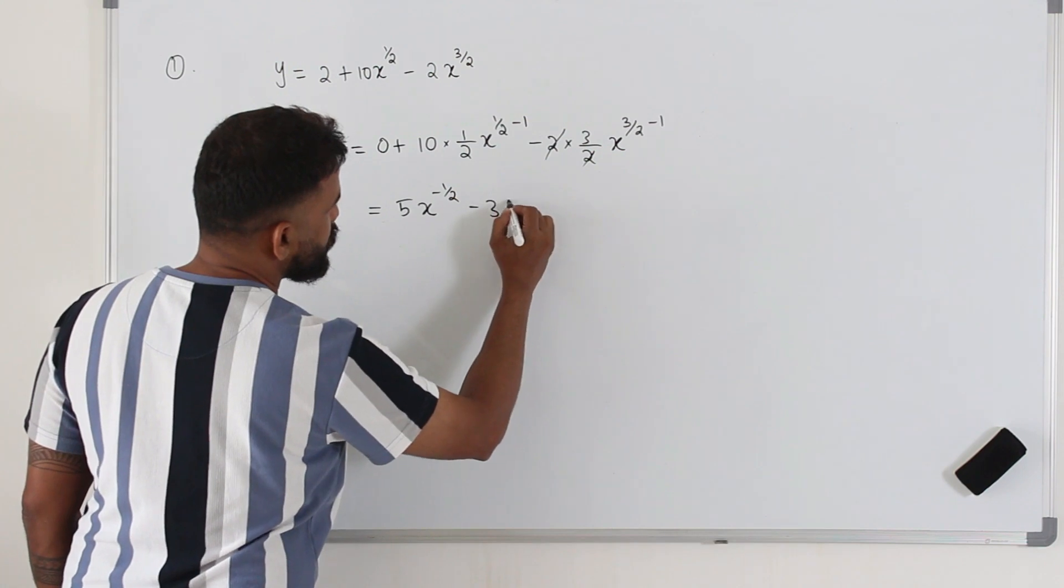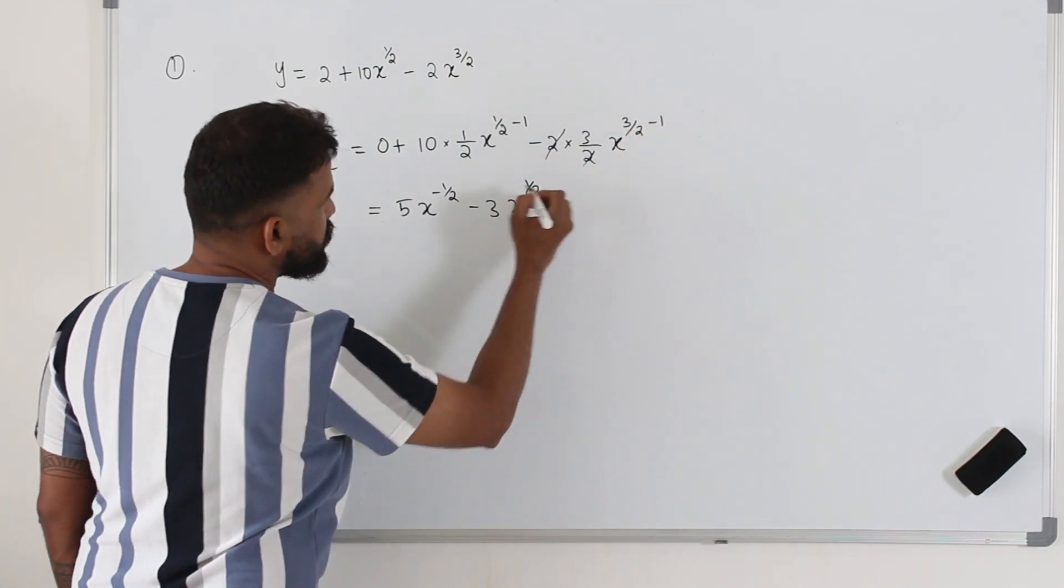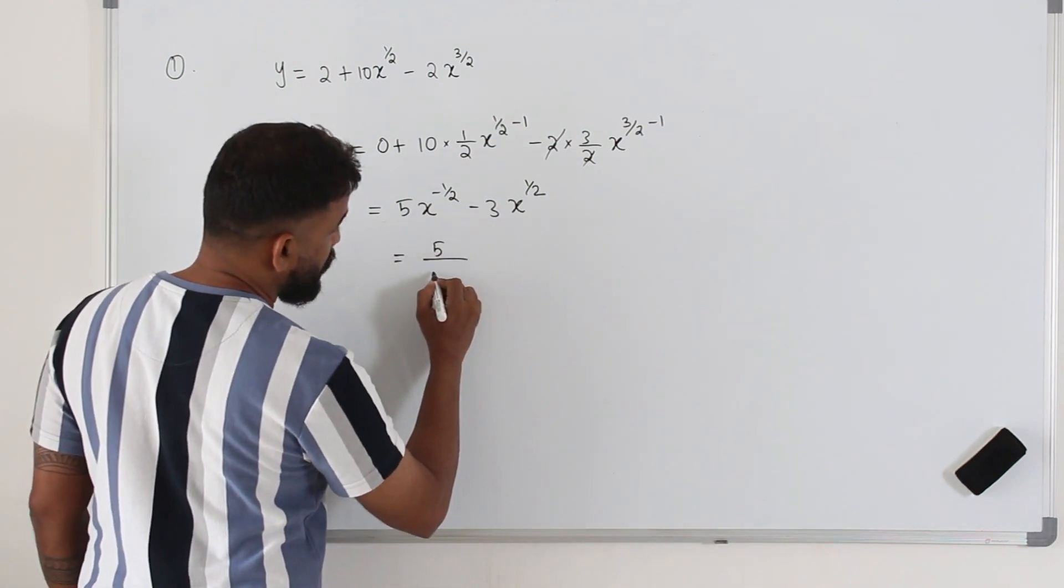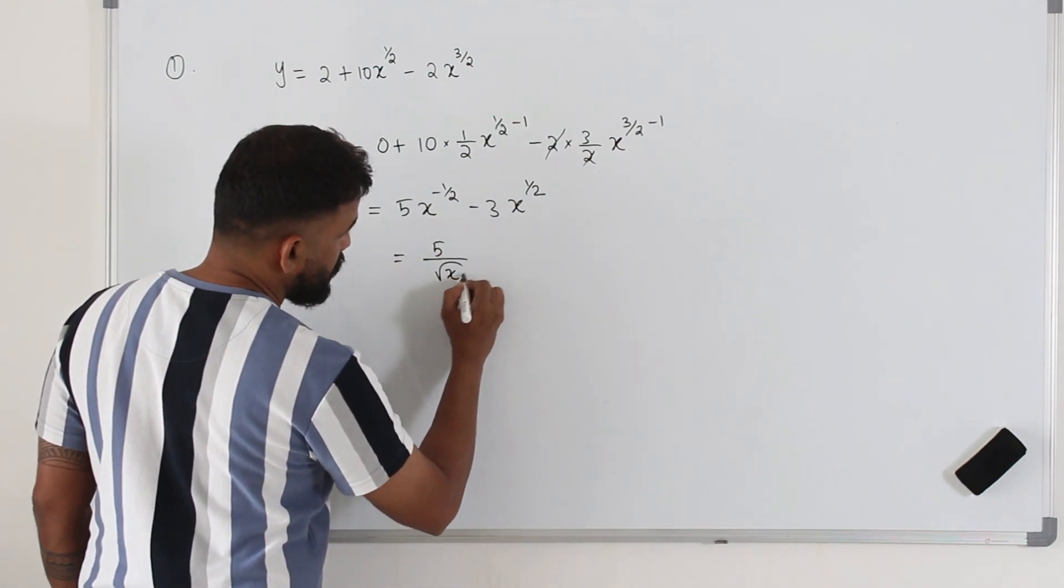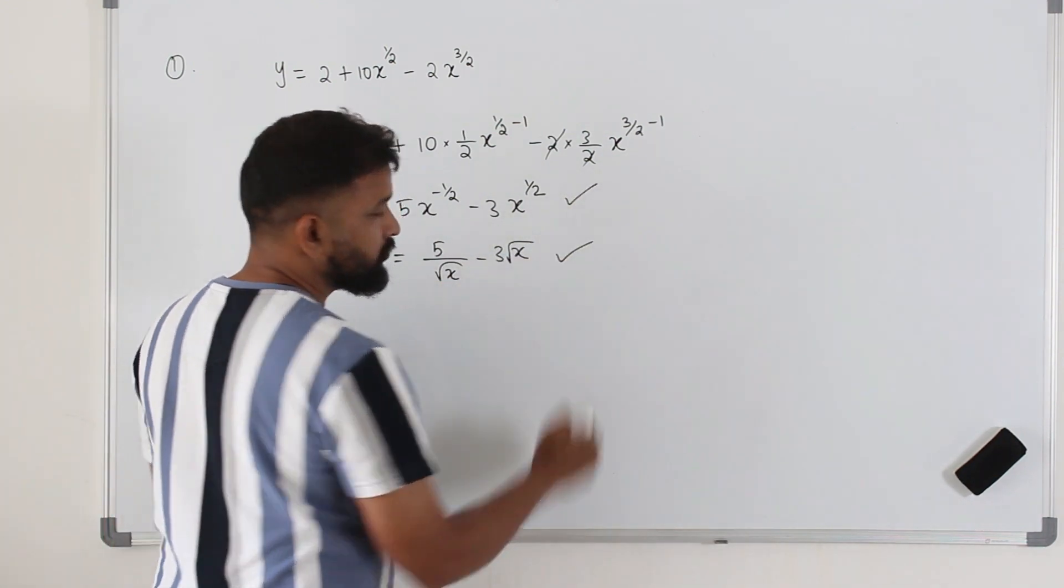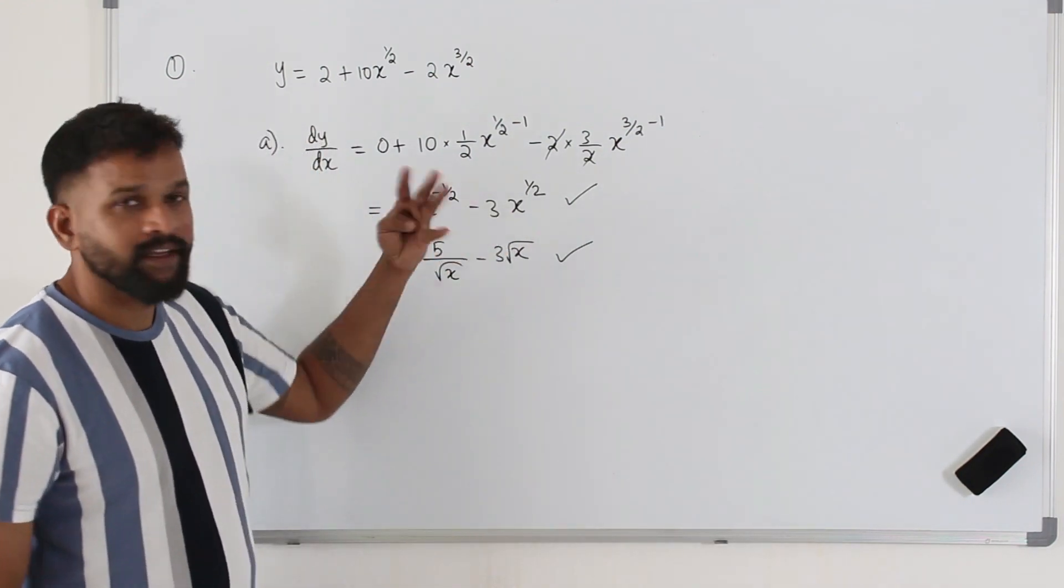Minus 3x to the power 3 over 2 minus 1 is half. You can write this as 5 over x power positive half minus 3x power half. Both are correct answers. I would suggest you to leave it here. That's the answer.